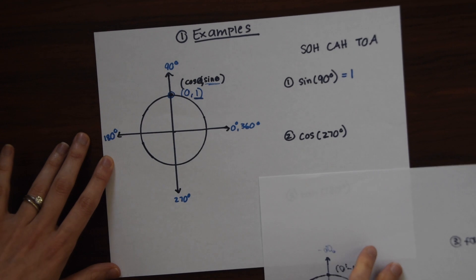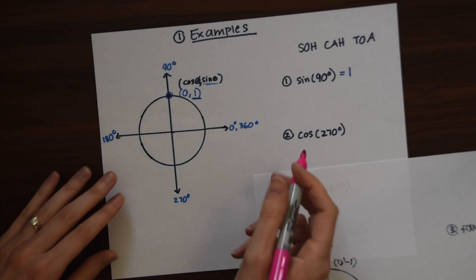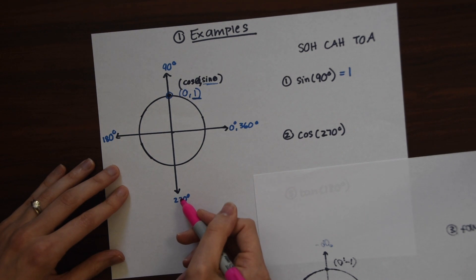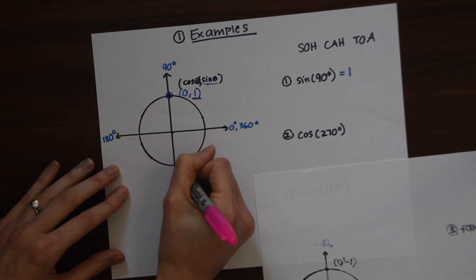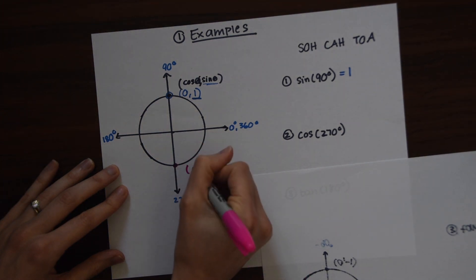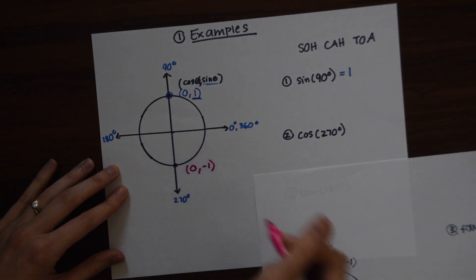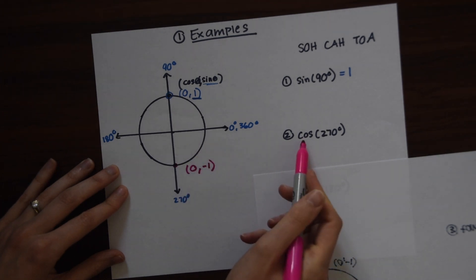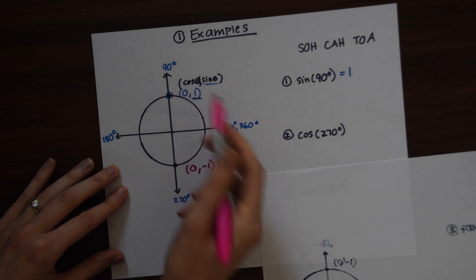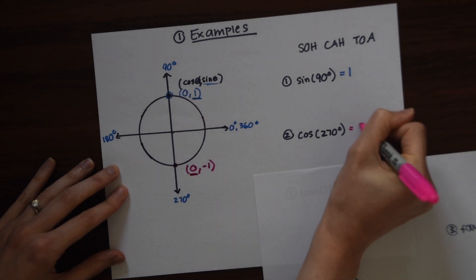Let's try another one: cosine of 270. We go to 270 degrees — the coordinate point is (0, negative 1). This time we want cosine, which is represented by the x-coordinate. So we know that cosine of 270 is equal to 0.